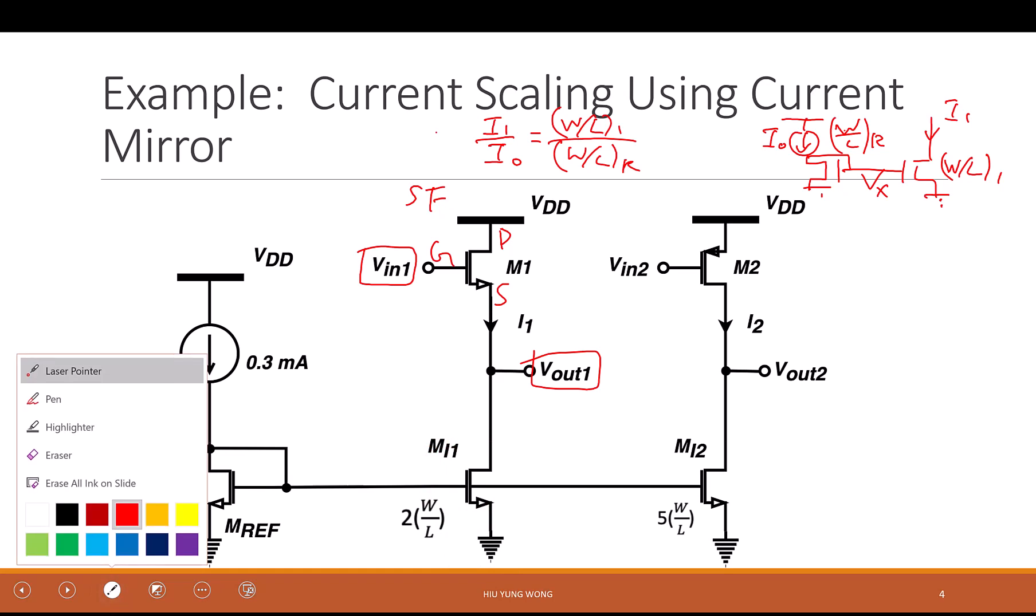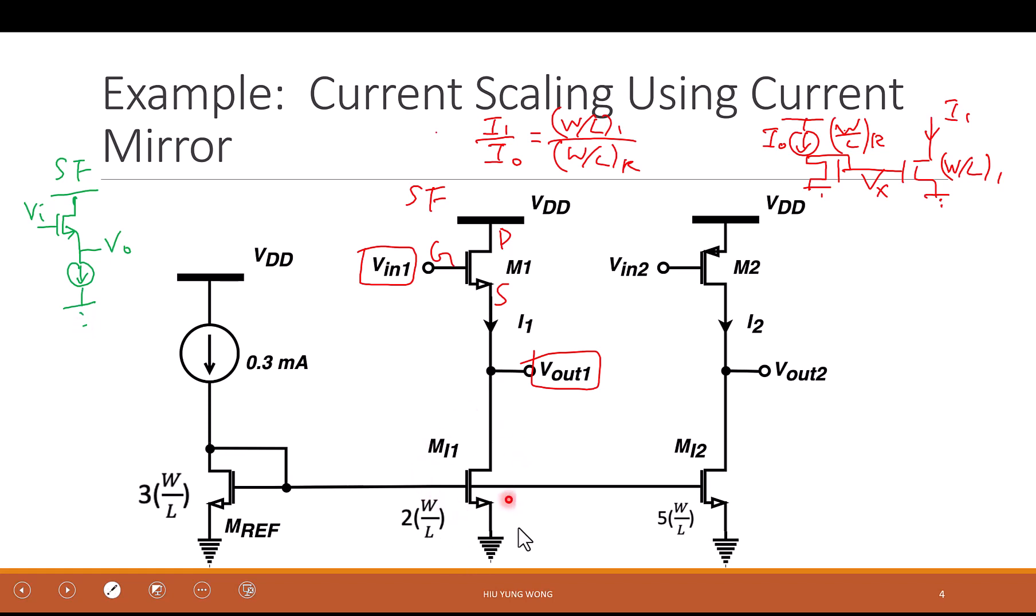Let's just recall what a source follower supposed to be. In the past, we say that for source follower, yeah, this is V out, this is V in. But exactly, you need to have a resistor or you need to bias it with a current, right? And how do we bias it? You either bias with a resistor or bias with a current source. And this is the current source, okay?